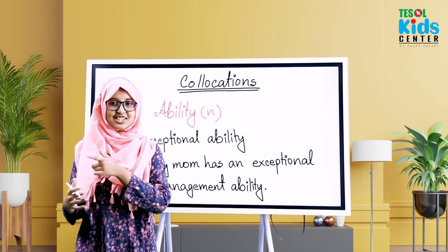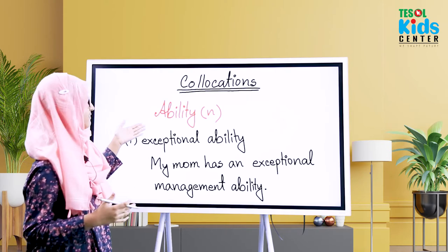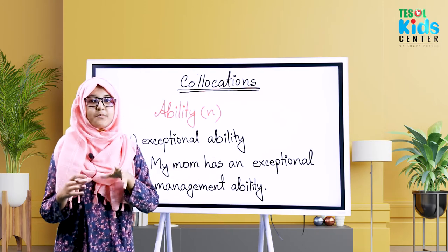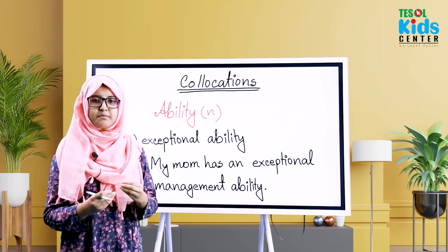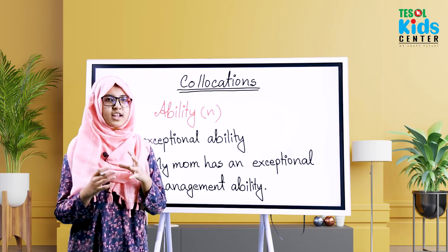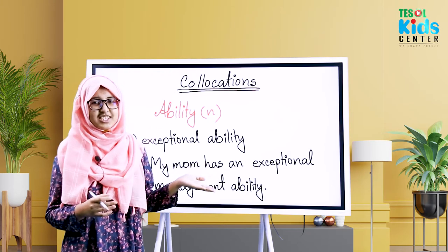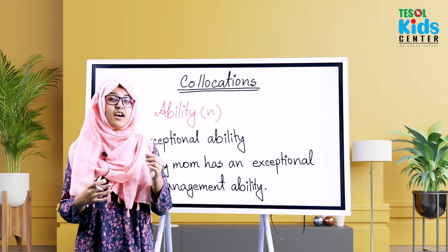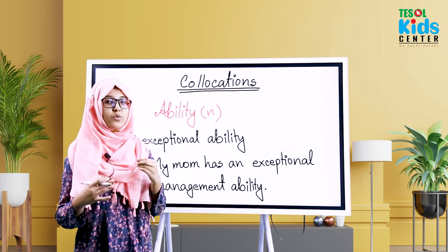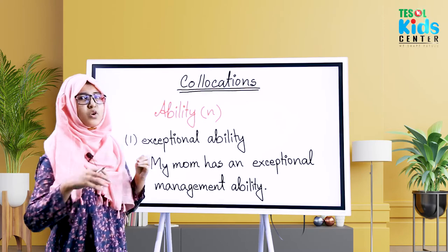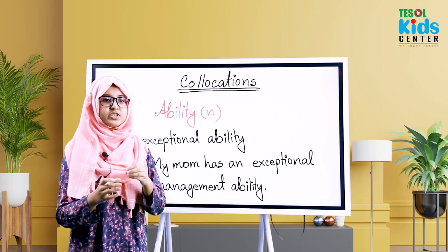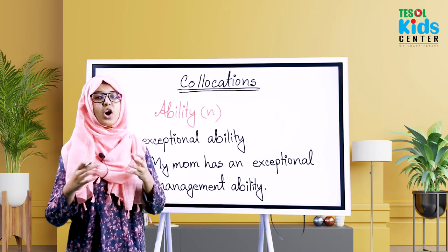So to understand what collocation is, we choose a word which is 'ability' — it's a noun. What type of words can we use before or after a word? That's actually called collocations. We can say 'she has a good ability,' but that doesn't sound very standard. If we say 'she has a really exceptional ability,' it sounds much better and more specific. So collocations mean putting an adjective or adverb before or after a word to specify it better.